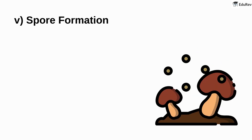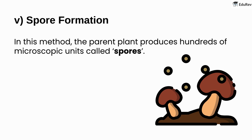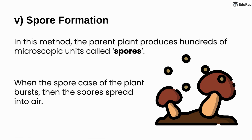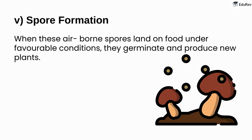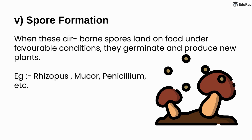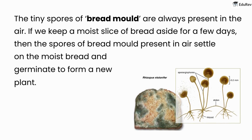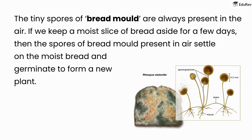Spore formation: in this method, the parent plant produces hundreds of microscopic units called spores. When the spore case of the plant bursts, the spores spread into the air. When these airborne spores land on food under favorable conditions, they germinate and produce new plants. Examples include Rhizopus, Mucor, Penicillium, etc. The tiny spores of bread mould are always present in the air. If we keep a moist slice of bread aside for a few days, the spores of bread mould settle on the moist bread and germinate to form a new plant.